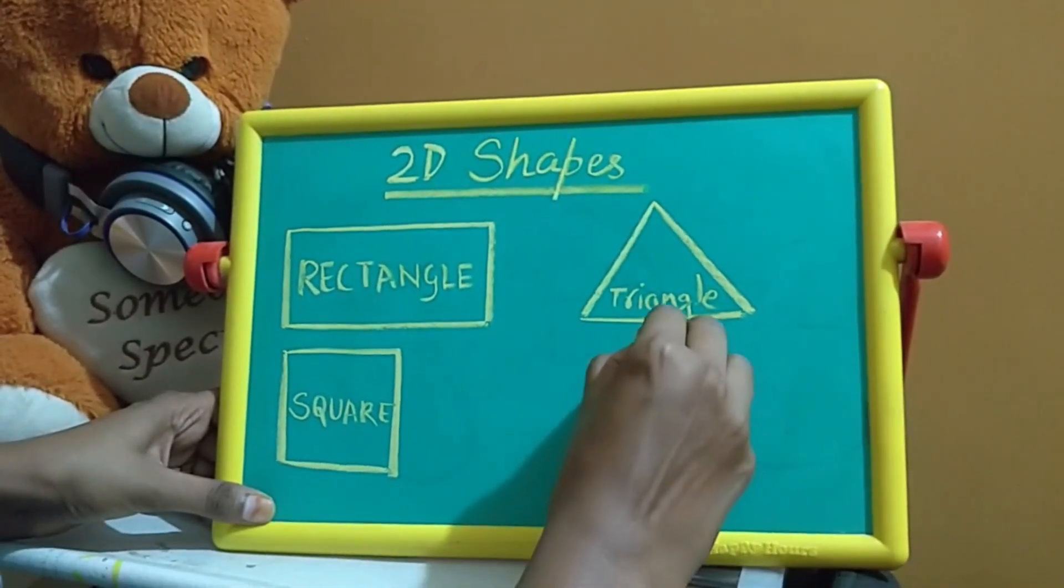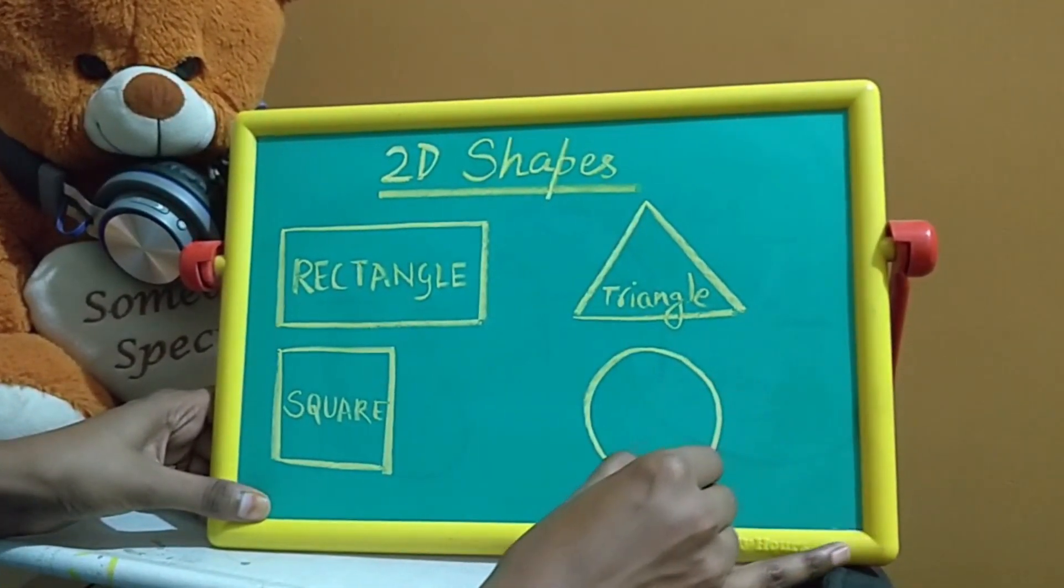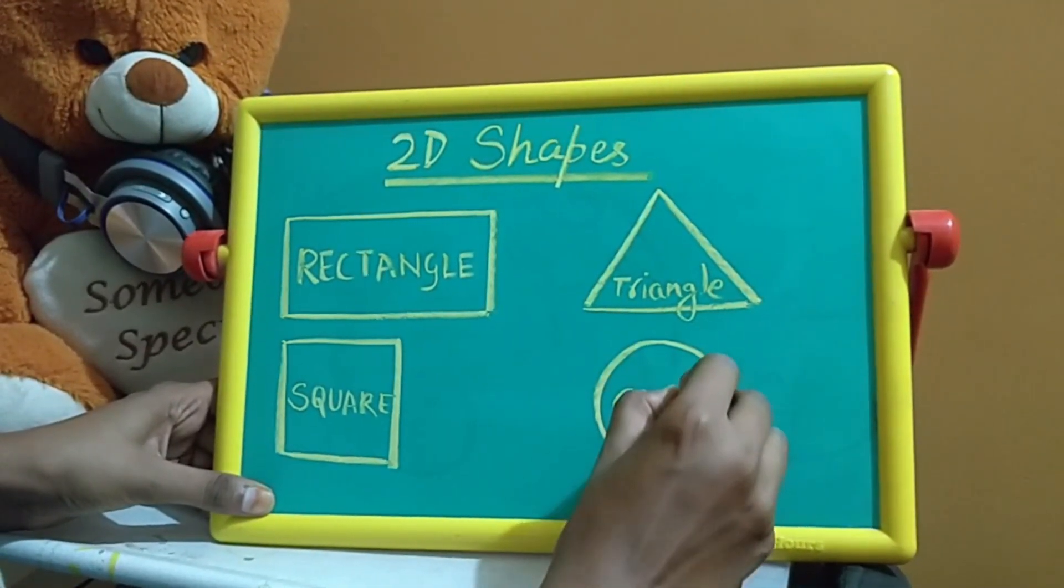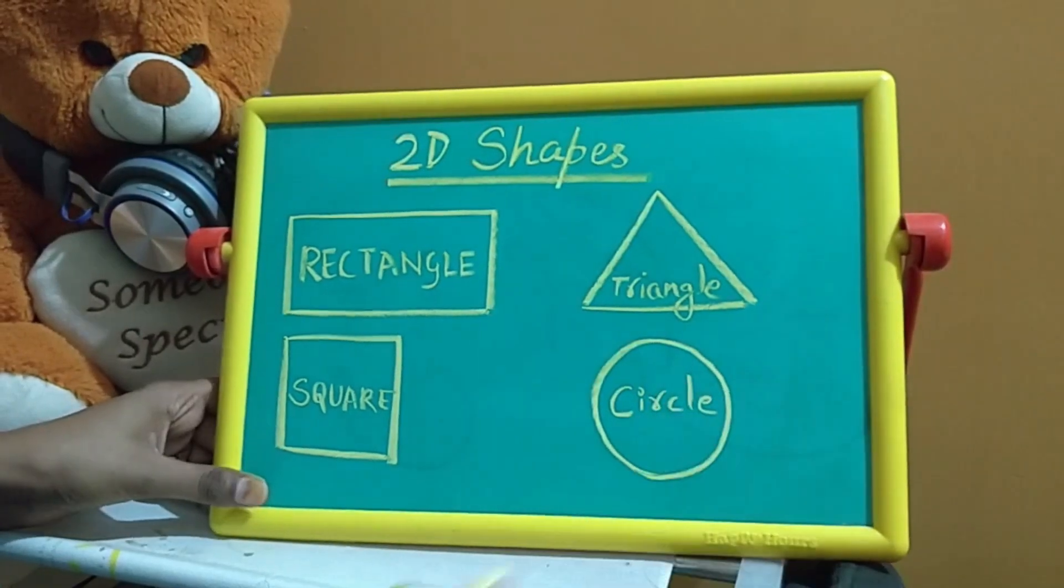Next one is Circle and a Circle has no side. So we have 4 shapes here. Thank you very much. Here we go! Thank you.